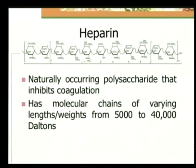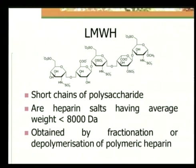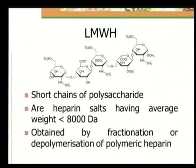Heparin is a naturally occurring polysaccharide that inhibits coagulation. It has molecular chains of varying lengths and weights, ranging from 5,000 to 40,000 daltons. Low molecular weight heparin is formed by snipping small fragments of the larger molecule — shorter chains of the polysaccharide with average weights of less than 8,000 daltons. The advantages of low molecular weight heparin over conventional heparin are ease of administration via subcutaneous route, and daily dosing — heparin needs up to four doses a day, while low molecular weight heparin can be given just once a day.